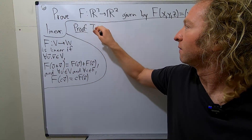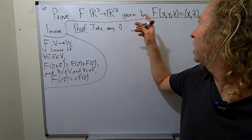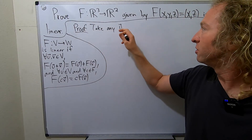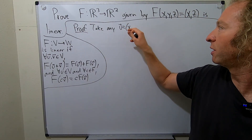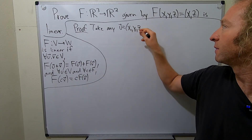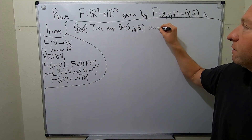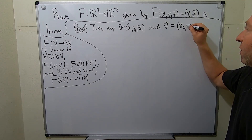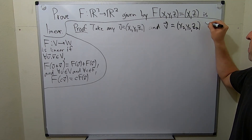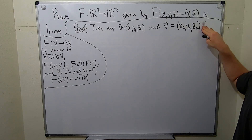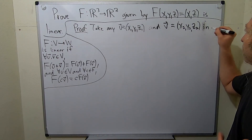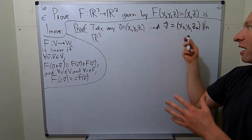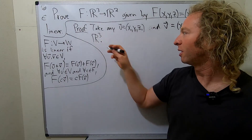So take any u — and I have to give the u's and v's components, because they're elements of R³, they're in the domain. So I'm going to write u as (x1, y1, z1). And then v will be (x2, y2, z2), just to give it a convenient name that we can keep track of. And these will be elements in R³.